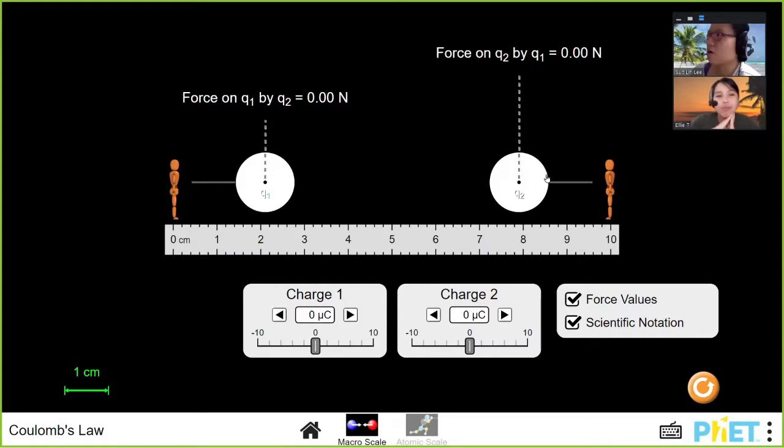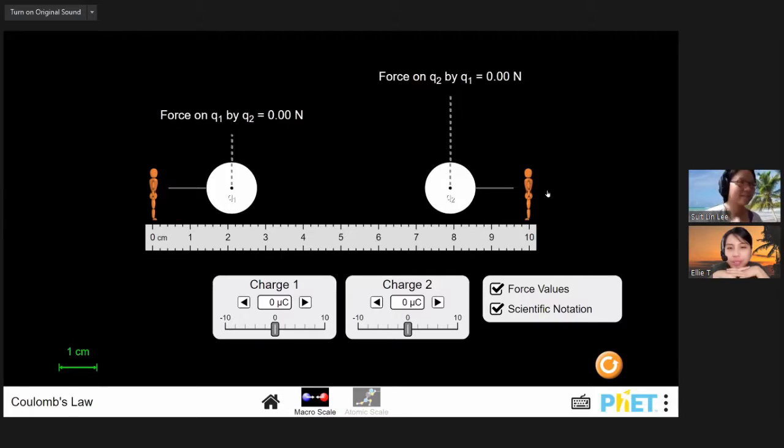So here is an example of two point charges, and let's observe how they interact or exert force on each other. If you remember, once upon a time you see point charges, they have a whole electric field. But what happens when you bring two point charges together? Currently, if you look at the charge of the first one on the left, is zero microcoulomb. Charge two, also zero. So no charge, no force.